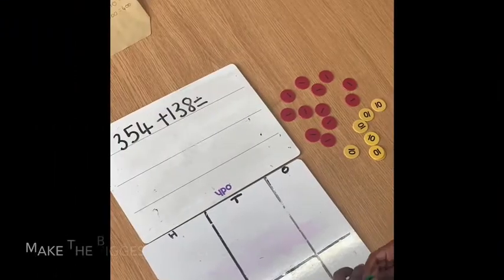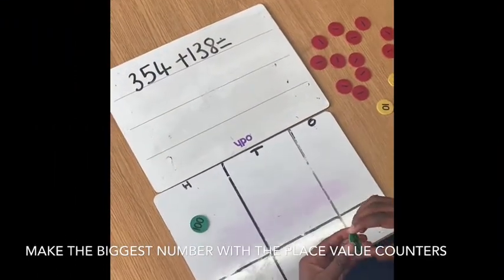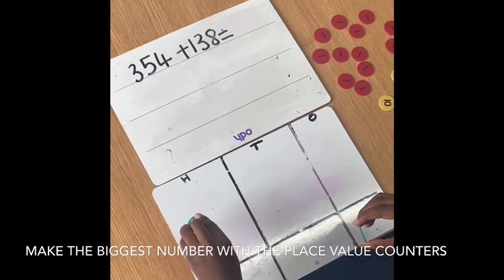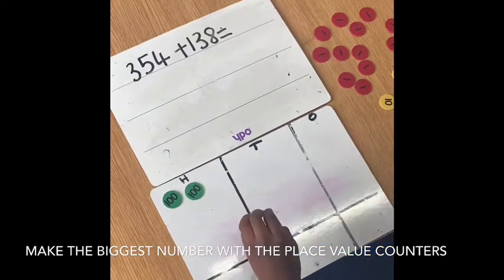We are going to use the written method for addition. The equation is 354 plus 138. So 100, 200, 300.